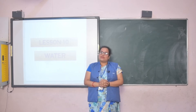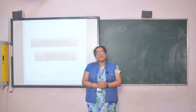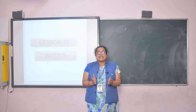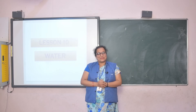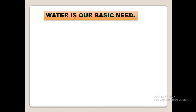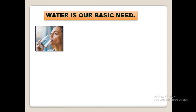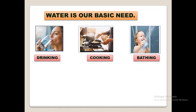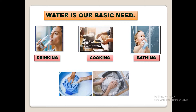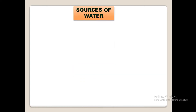of Earth's surface in the form of oceans, rivers, lakes, ponds, etc. All plants and animals cannot live without water. Water is our basic need — we cannot live without it. It is used for drinking, cooking, bathing, washing, and many other purposes.